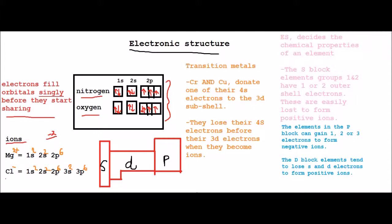And this is the same scenario for the chloride ion here. So all we have to do is add one to the chlorine's electronic configuration. So we get 1s2, 2s2, 2p6, 3s2, and 3p6.